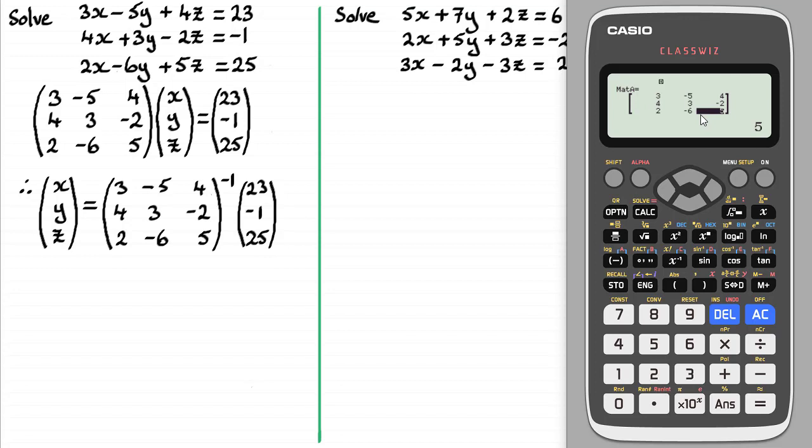I'm also going to set up this column matrix here: 23, -1, 25. So if I come out of this, we'll go to options again and we're going to define another matrix. So we'll go for 1. And it's going to be called matrix B now. So I'll put 2 and we're going to have number of rows, which is going to be 3. Number of columns, just going to be 1 column. So I'll press 1 there and we've got our column matrix.